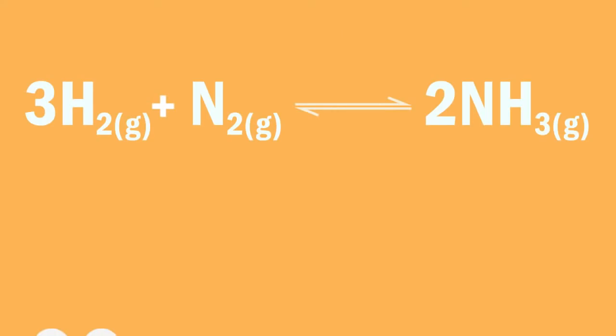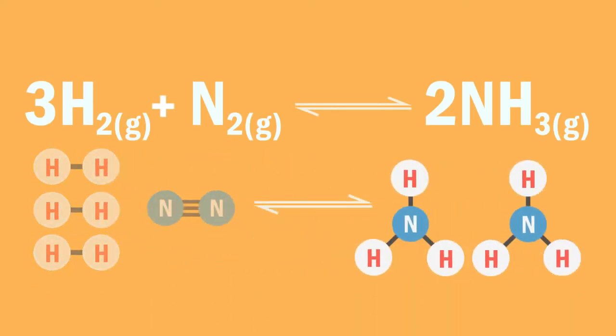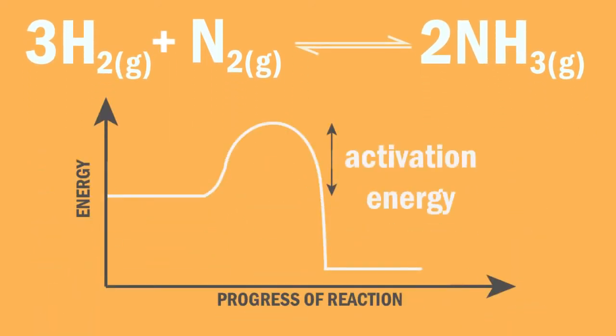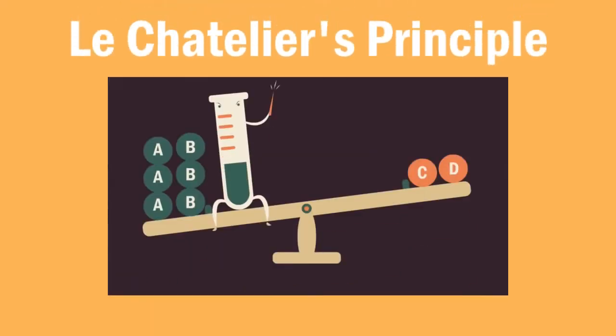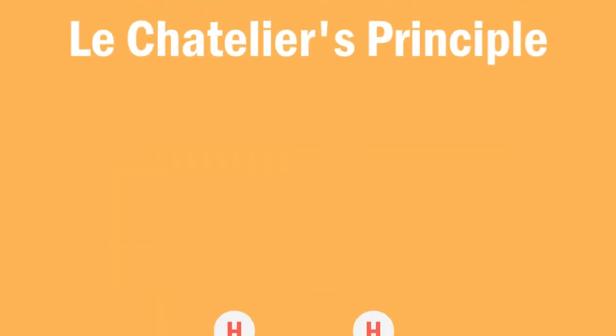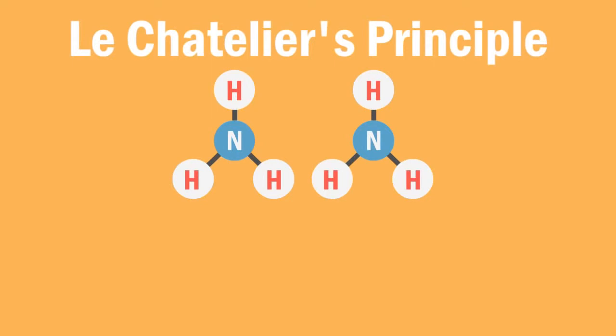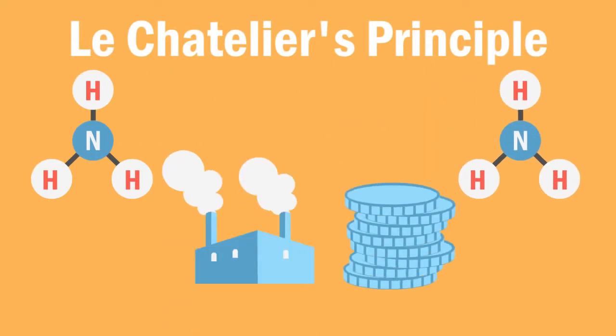Let's revisit this reaction again. Note that this is a reversible reaction and that the forward reaction is exothermic. The Haber process uses Le Chatelier's principle to maximize ammonia production while keeping operating and production costs in mind.